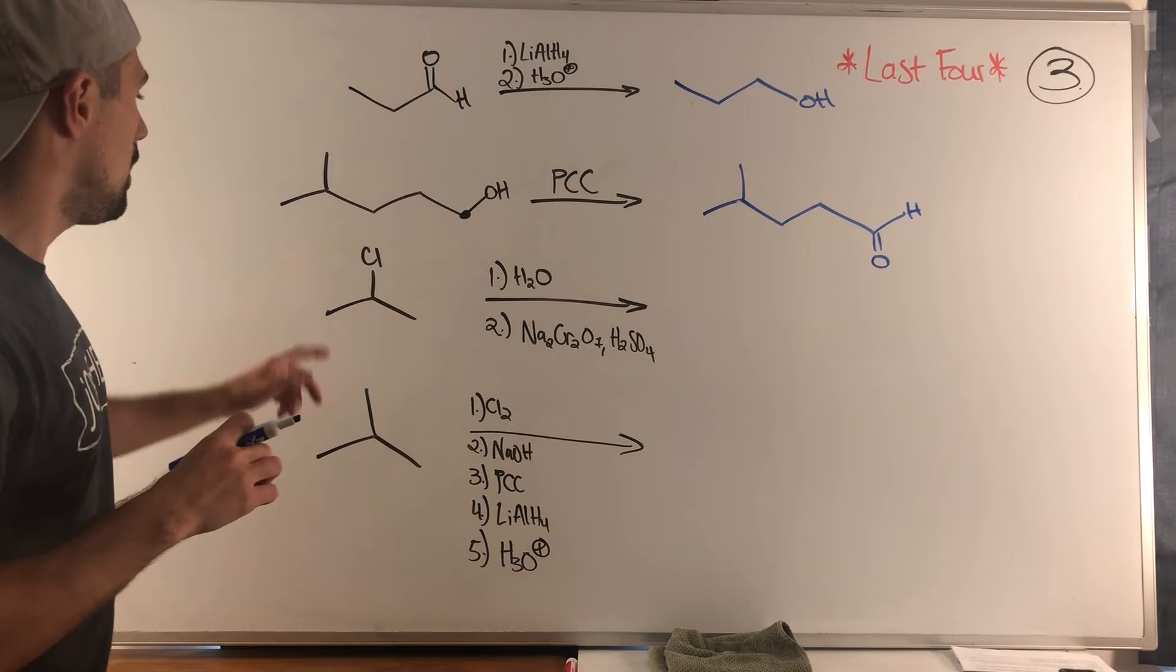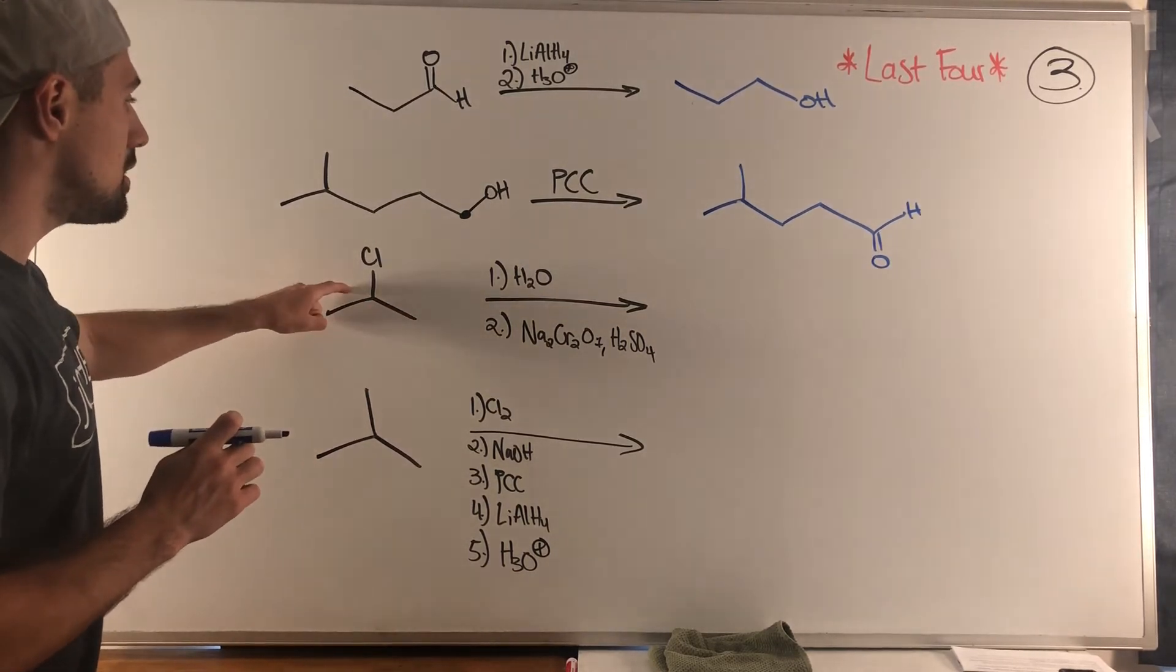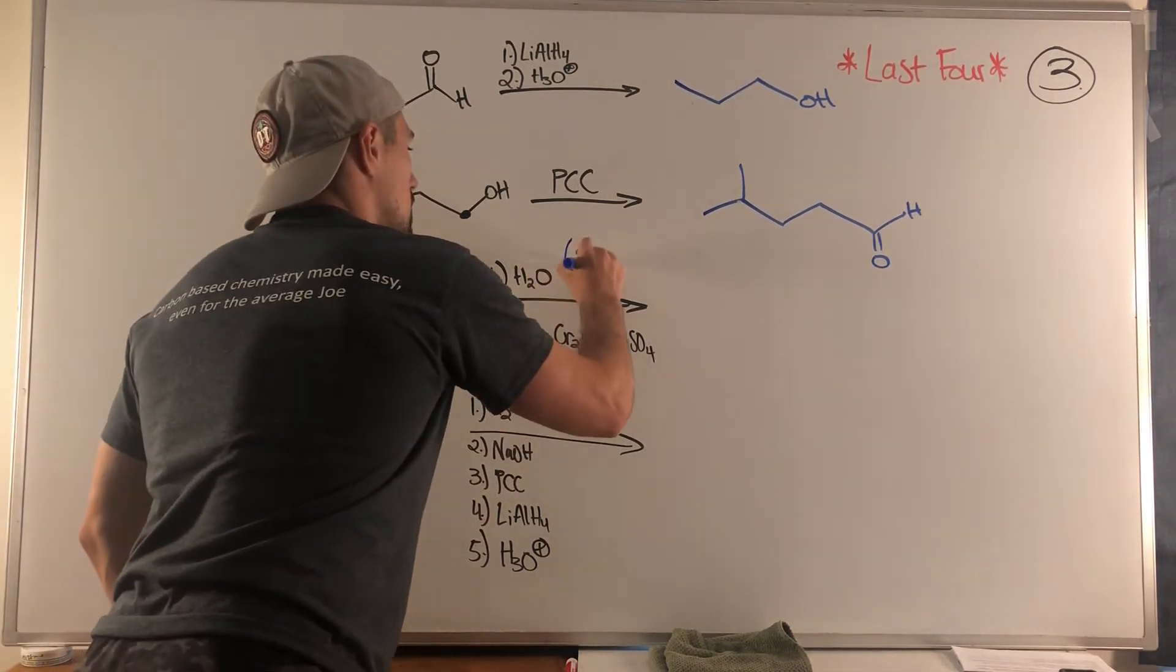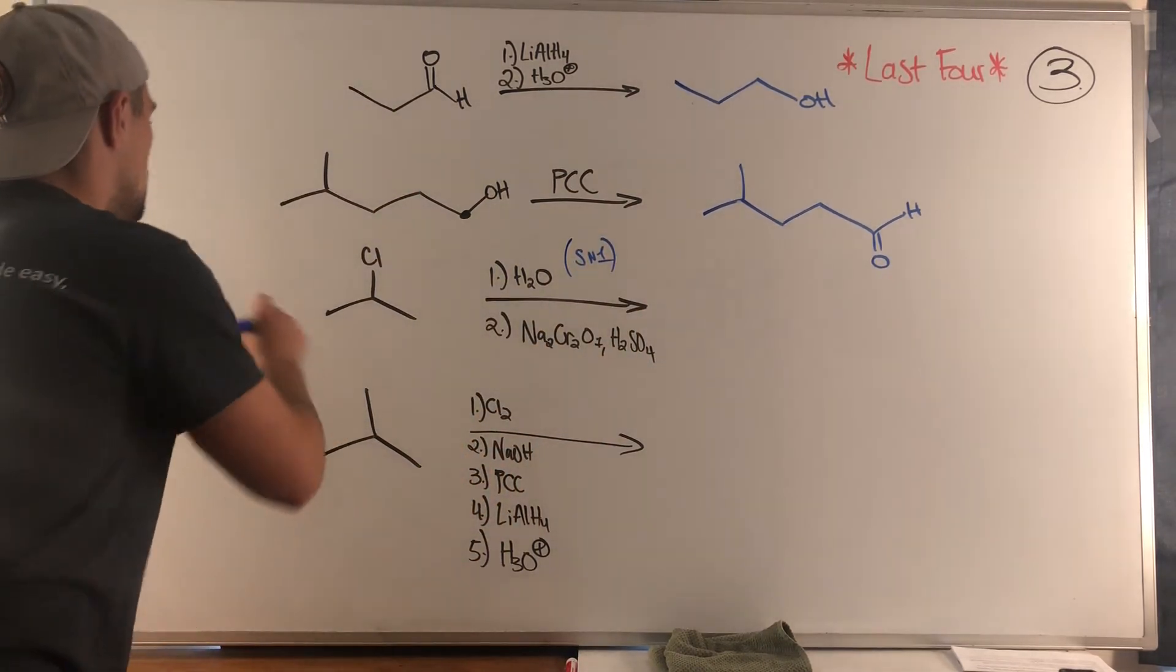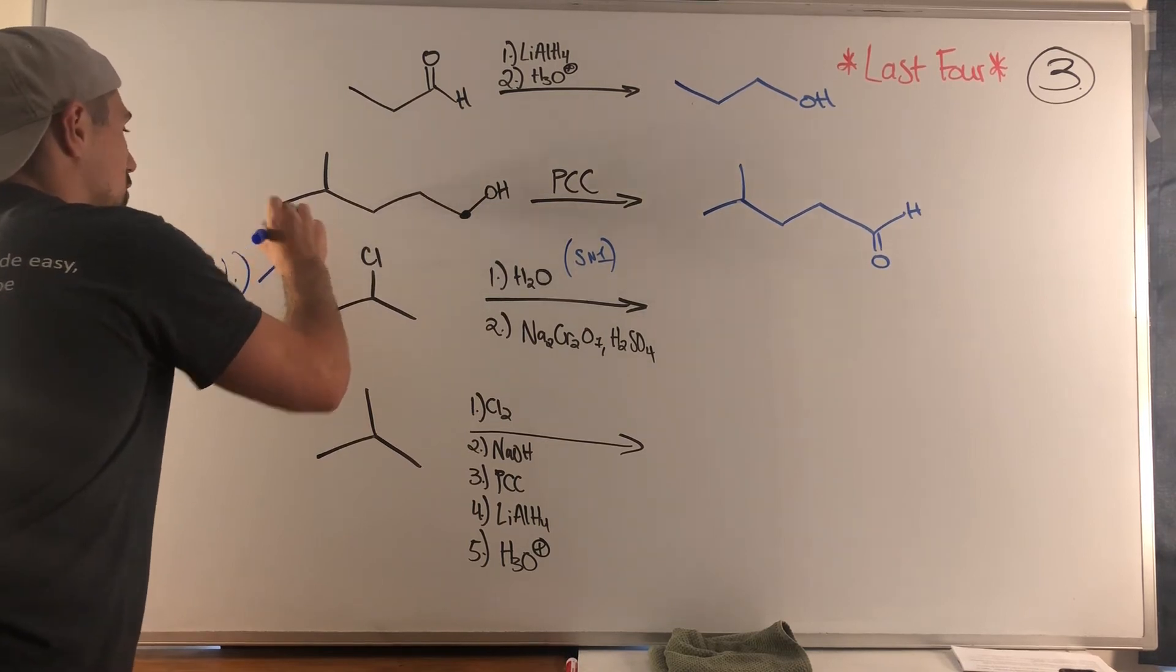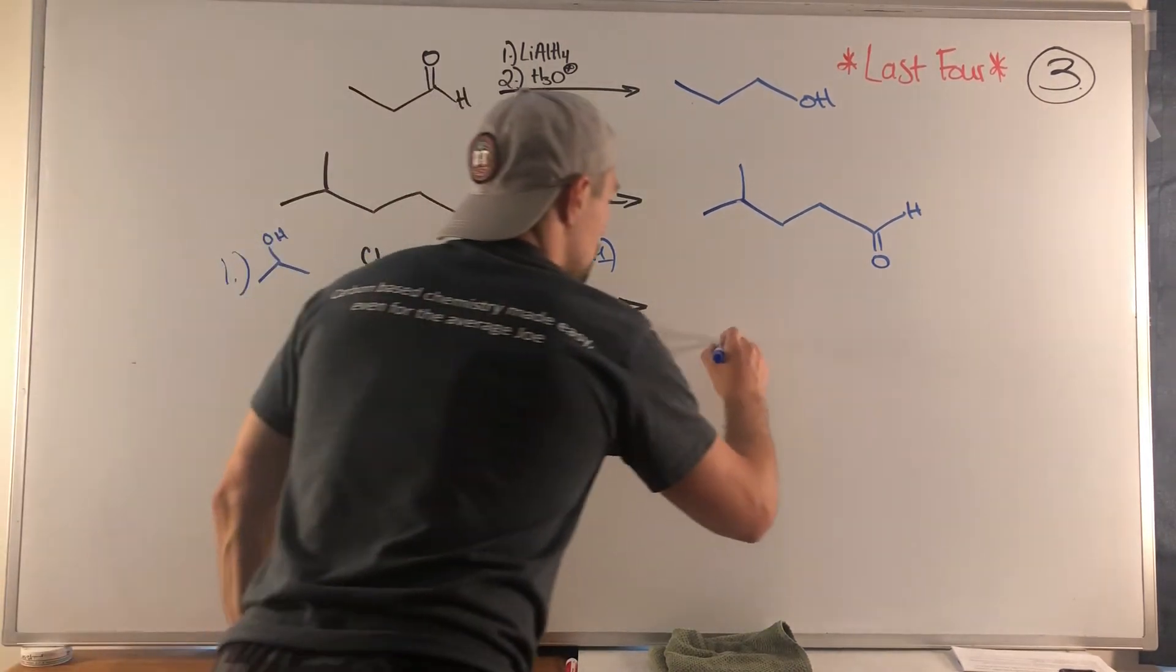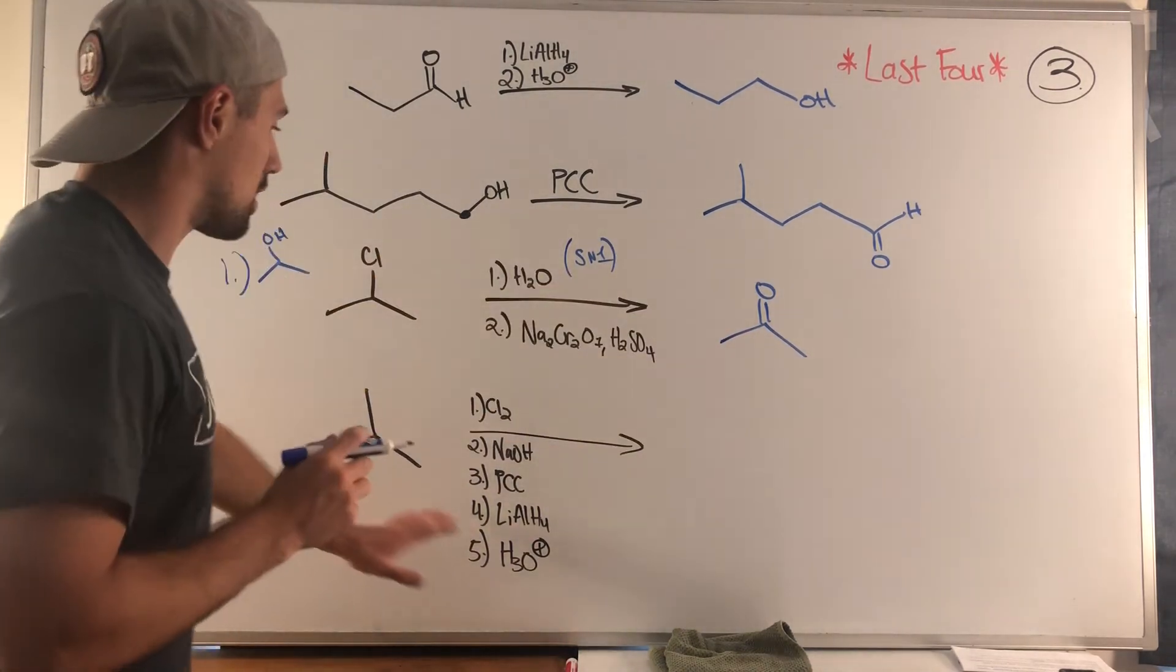This one we have a multi-stepper, secondary alkyl halide. In the first step we're doing SN1. When you have multiple steps I like to work in the margins - this is what we'll have after the first step, isopropyl alcohol, and then we can oxidize that in step two to a ketone.